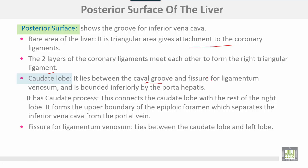The caudate lobe is bounded inferiorly by the porta hepatis and has a caudate process, which connects the caudate lobe with the rest of the right lobe. It forms the upper boundary of the epiploic foramen, which separates the inferior vena cava from the portal vein. The fissure for ligamentum venosum lies between the caudate lobe and the left lobe.